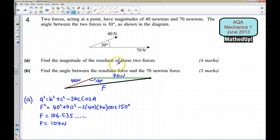So that's the magnitude of the resultant of the two forces. Now for part B we're asked to find the angle between the resultant force and the 70 newton force. So what we're looking for here is we're looking for this angle between the 70 newtons and this force here.